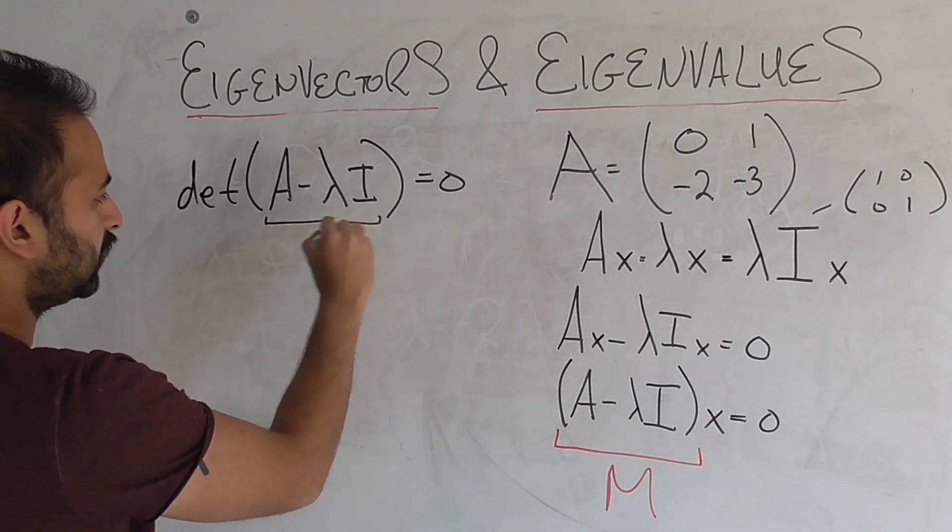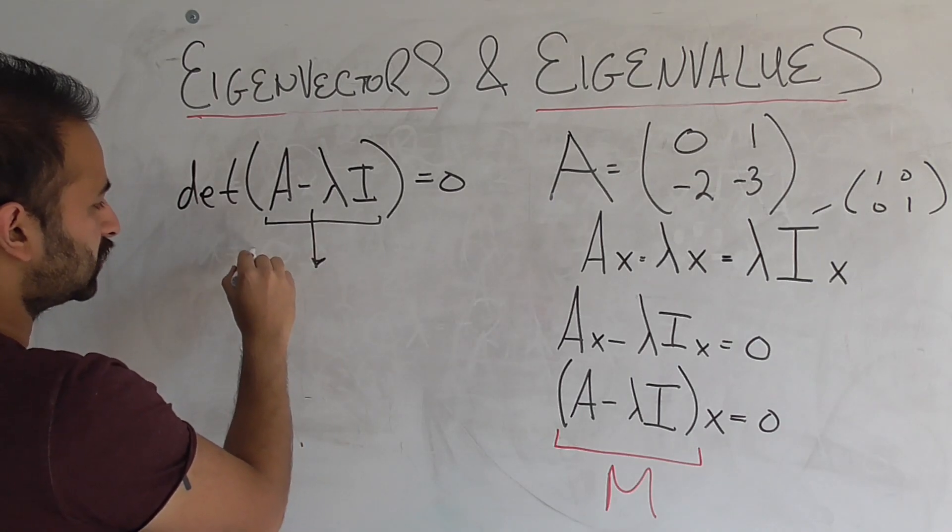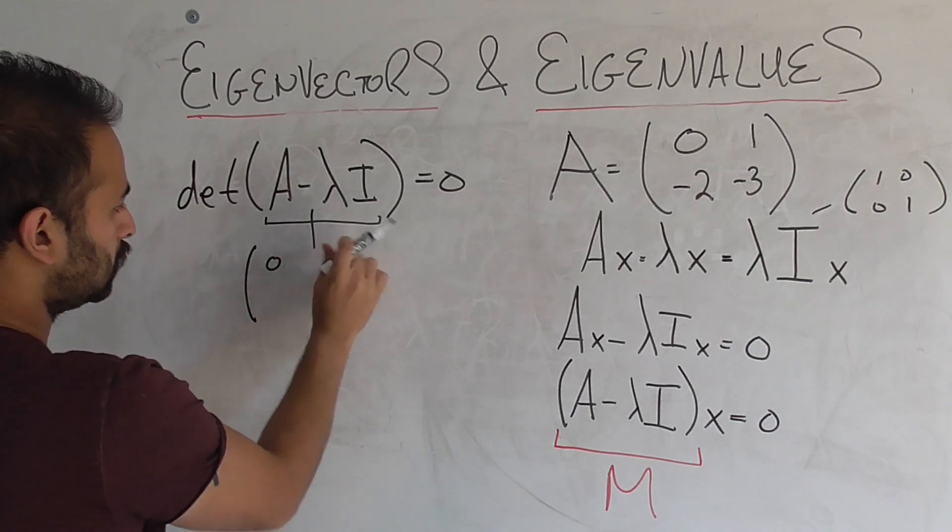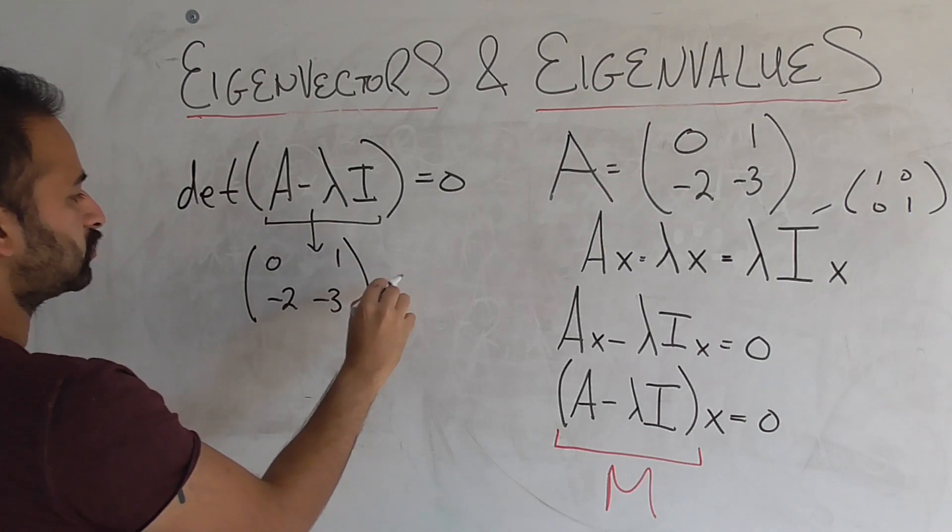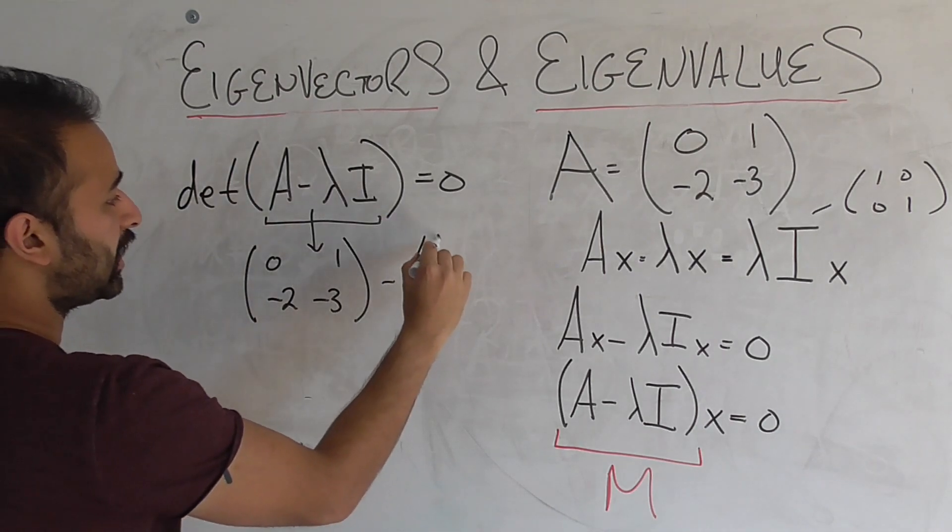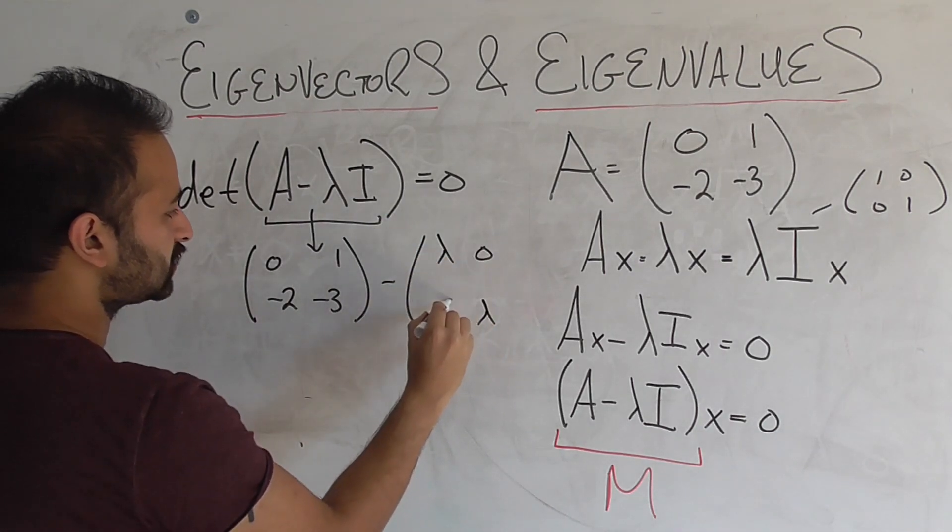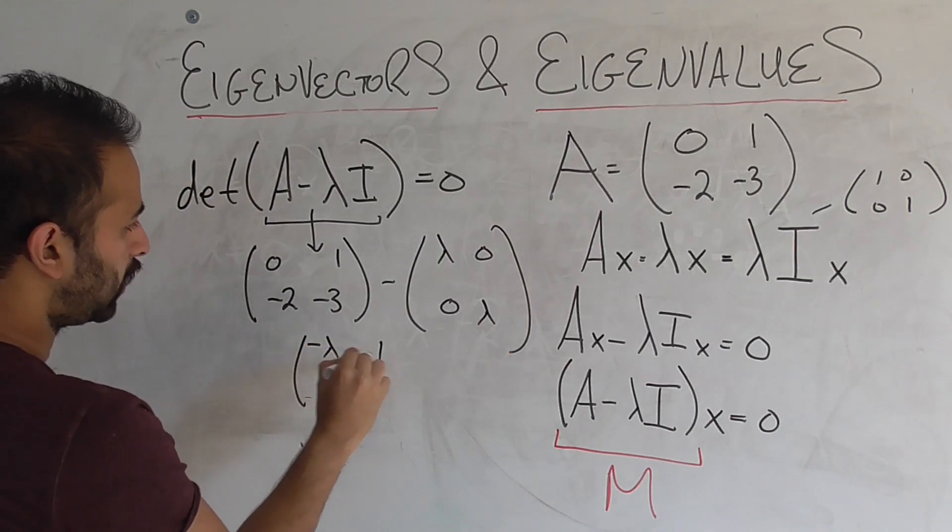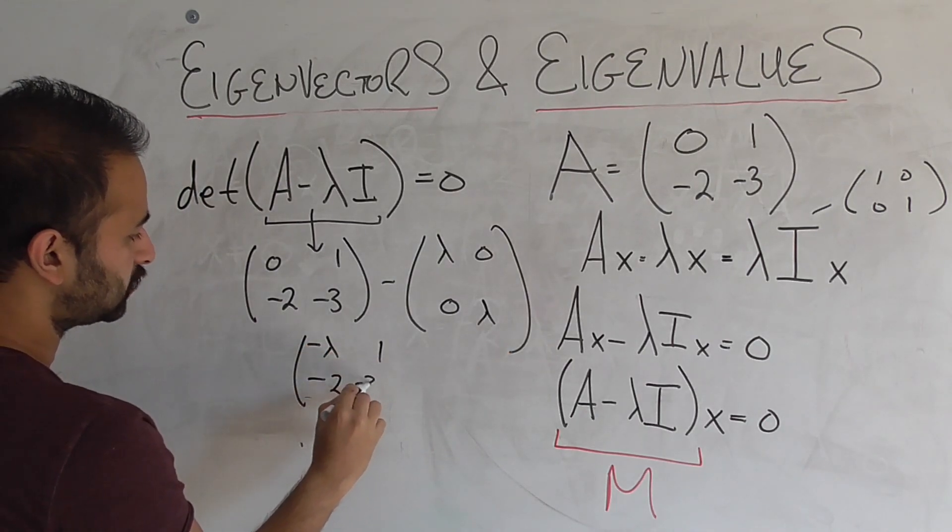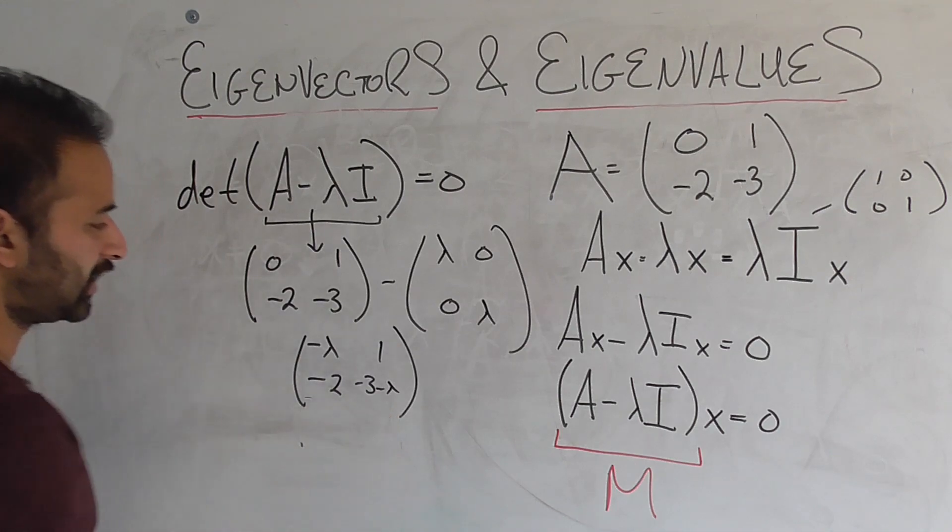Let's go ahead and write this in its full form. So this is 0, this is 0, 1, minus 2, minus 3. We subtract lambda times I, which looks like this. And we get negative lambda, we get 1, we get minus 2, and we get minus 3 minus lambda as that entry. And we want to know what's the determinant of that matrix.